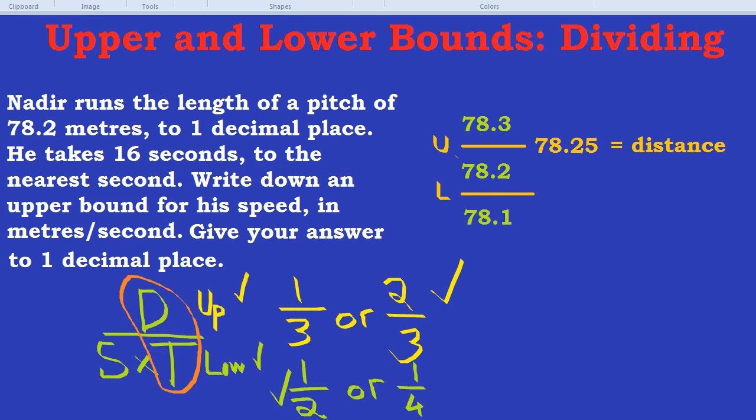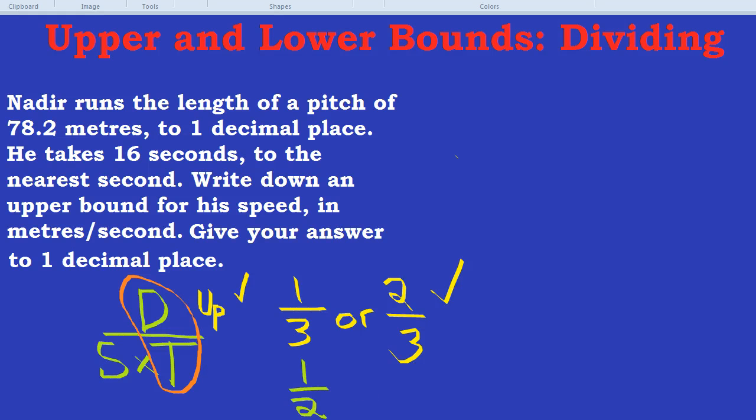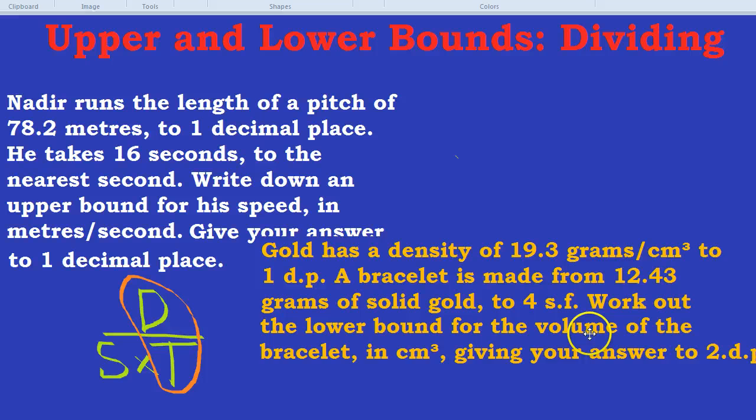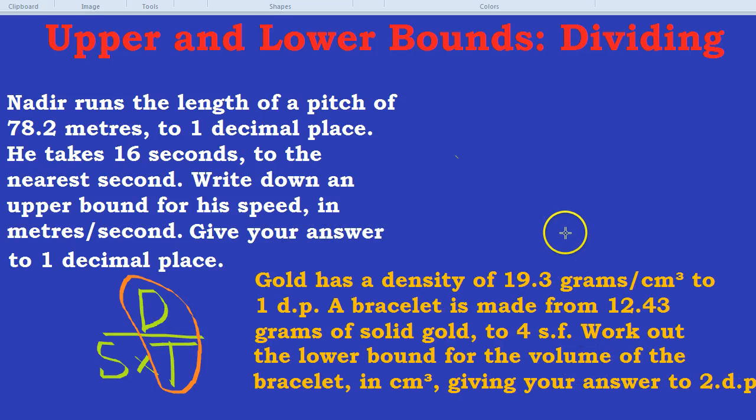So here we have 5.0 meters per second. It's a little bit complicated, so let's try one more example just to have a bit of practice. Give ourselves some space. How about this question? Let's do it down here. Gold has a density of 19.3 grams per centimeter cubed, and that's real. That's actually what the density of gold is, to one decimal place. A bracelet is made from 12.43 grams of solid gold to four significant figures, SF for short. Work out the lower bound for the volume of the bracelet in centimeters cubed, giving your answer to two decimal places.